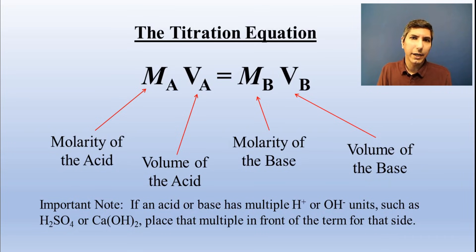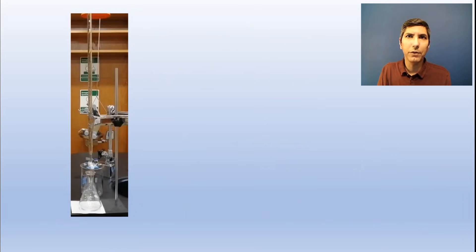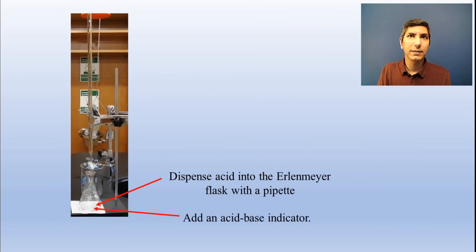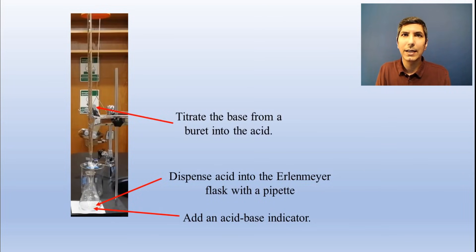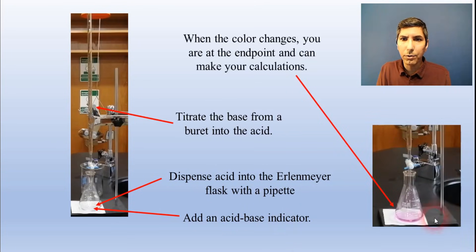The most common titration in AP Chemistry involves using a volumetric pipette to dispense a certain volume of an acid into an Erlenmeyer flask. You then add a few drops of an acid-base indicator that will change color when you get to the end point of the titration. Then, you use a burette to dispense a base, usually a strong base like sodium hydroxide, into the acid solution. When the indicator changes color, you know you're at the end point, and you can use the volume of base added from the burette in your calculations.